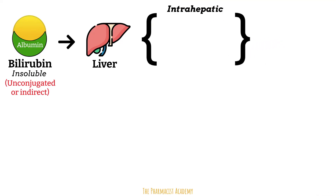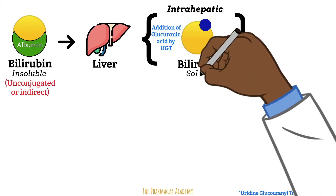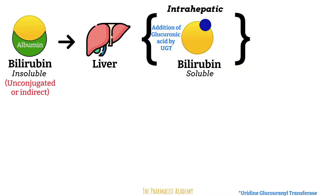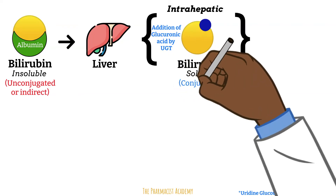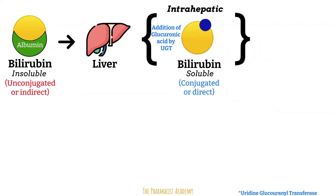The liver will accomplish this by adding to it glucuronic acid, aided by the enzyme uridine glucuronyl transferase. This will make the bilirubin more polar and water-soluble. Ladies and gentlemen, this is what we call conjugated bilirubin.